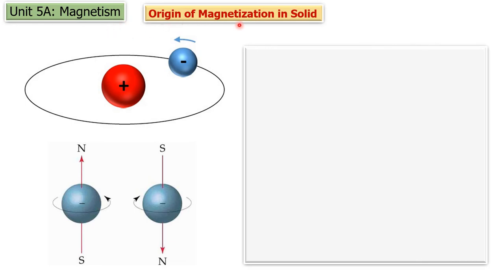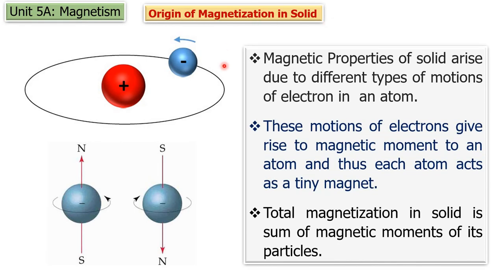This is the origin of magnetization in solids. We know the basic reason for generation of magnetization is motion of charged particles. So is there any motion of charged particles in a solid? Suppose a solid has magnetization — that means is there any motion of charged particles inside the solid? Yes, of course.